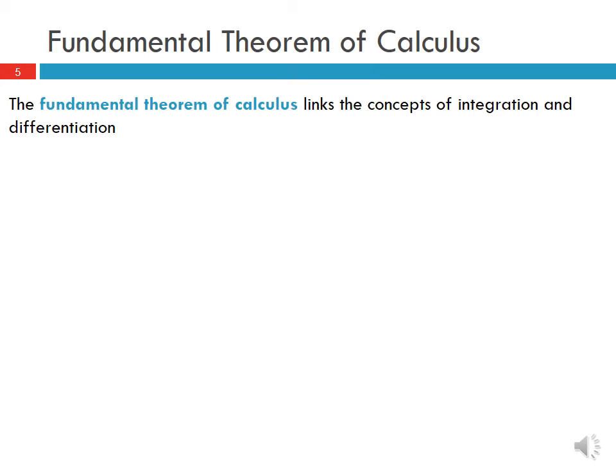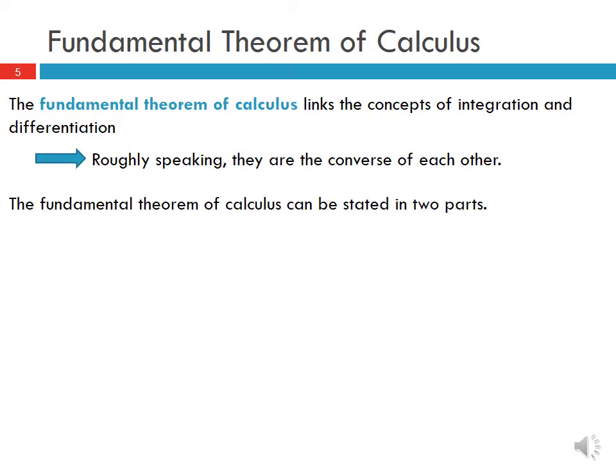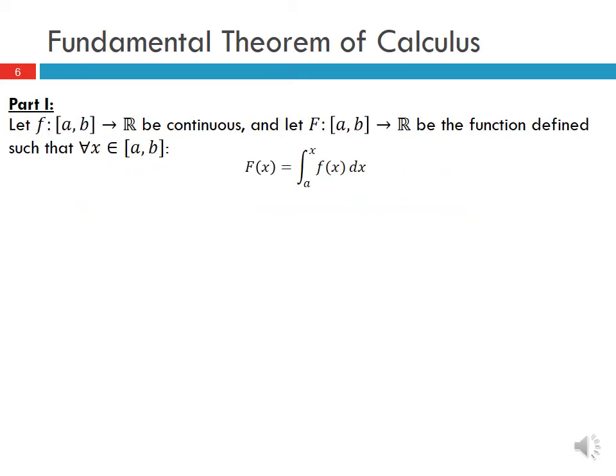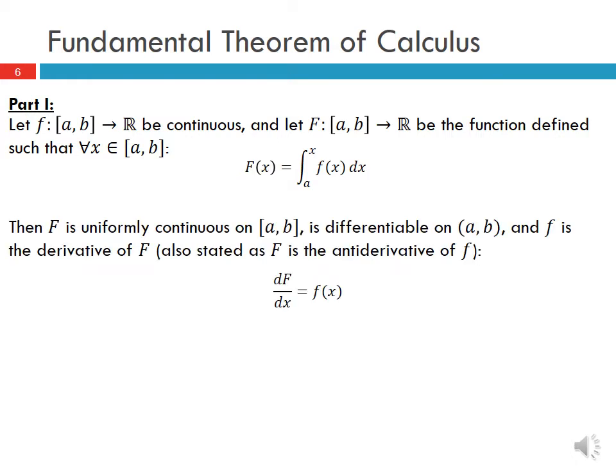The fundamental theorem of calculus links the concepts of integration and differentiation — roughly speaking, they are the converse of each other. The theorem can be stated in two parts. For part one, we let f on [a, b] be a continuous function, and let big F on [a, b] be the function defined such that for every x in [a, b], big F(x) is equal to the integral from a to x of f(x) dx. Then big F is uniformly continuous on the closed interval [a, b], differentiable on the open interval (a, b), and f is the derivative of big F — equivalently, big F is the antiderivative of little f, meaning dF/dx equals f(x).